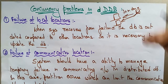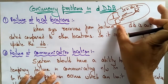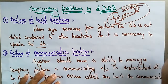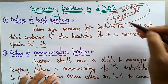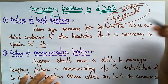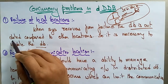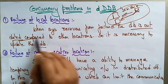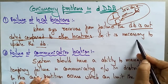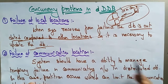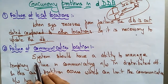So failure at local locations means whenever the system recovers from failure, the database is outdated compared to the other locations, and it is necessary to update the database.